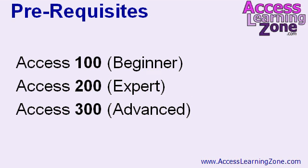I should also note that I'm currently in the process of renaming my courses as I re-record them for Access 2010. The 100 series is going to be called Beginner, the 200 series Expert, and the 300 series Advanced. So if you go to the website and can't find 101 or 201, that's why — the new courses will be called Beginner, Expert, and Advanced. Don't get confused if you see them like that on the website.